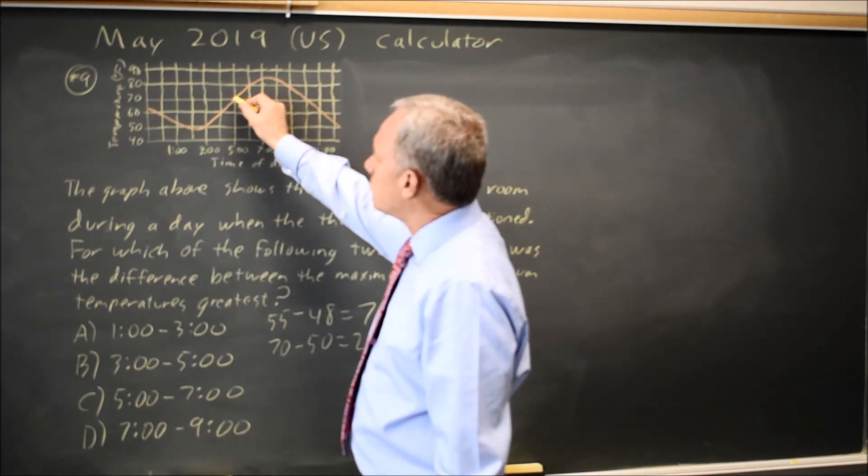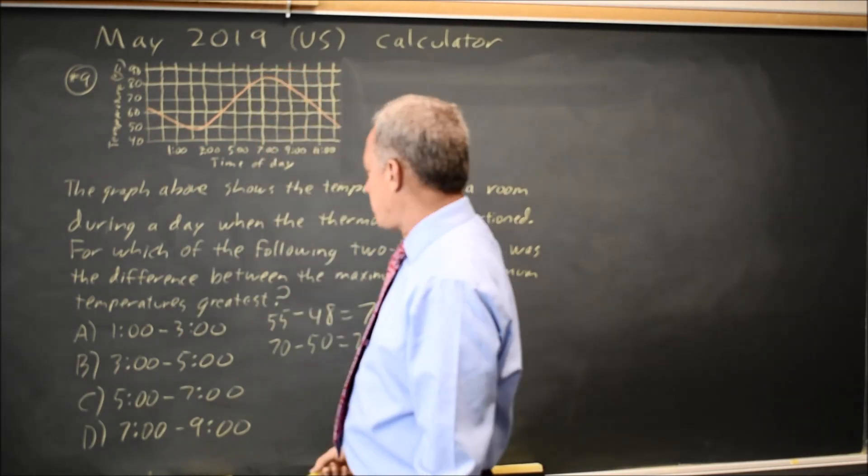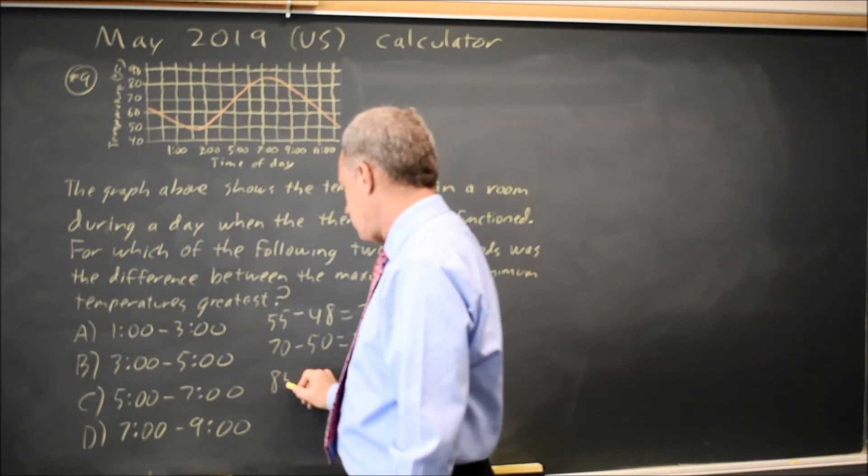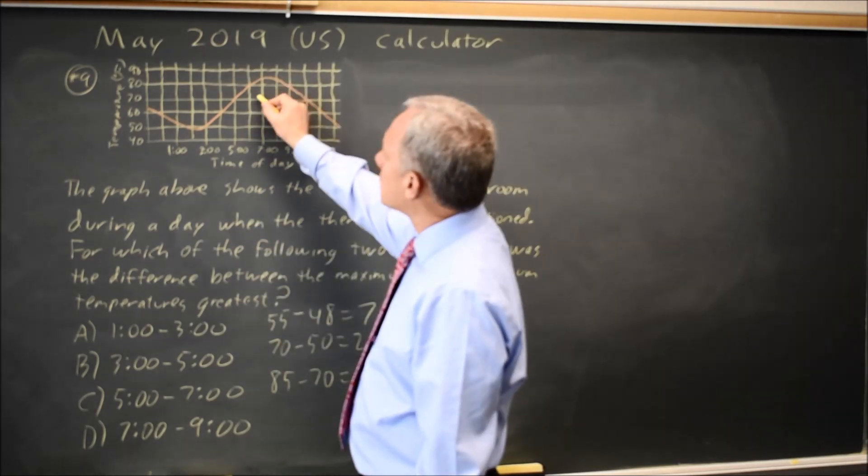From 5 to 7, the minimum is 70, and the maximum is perhaps 85, so the difference is 15.